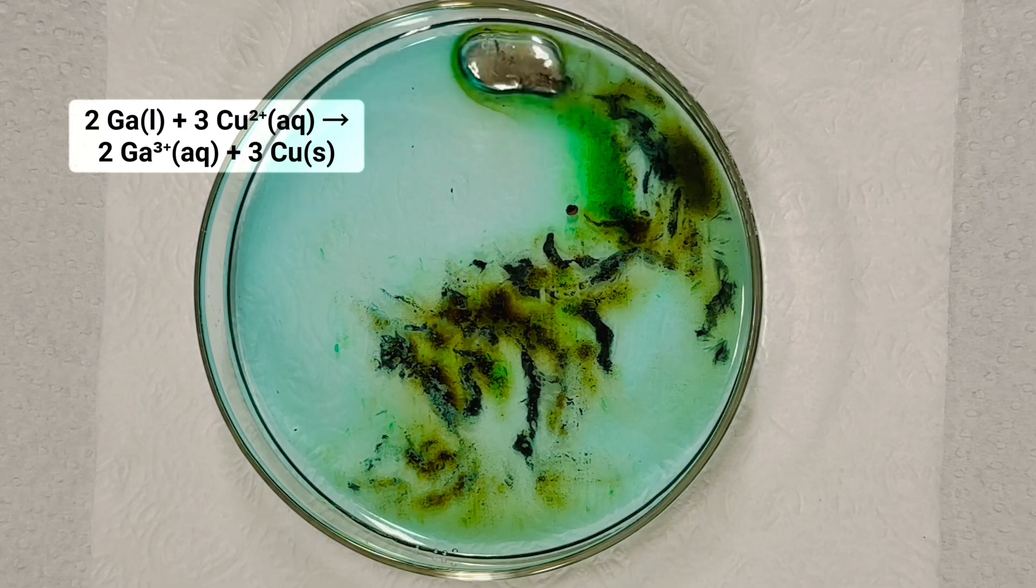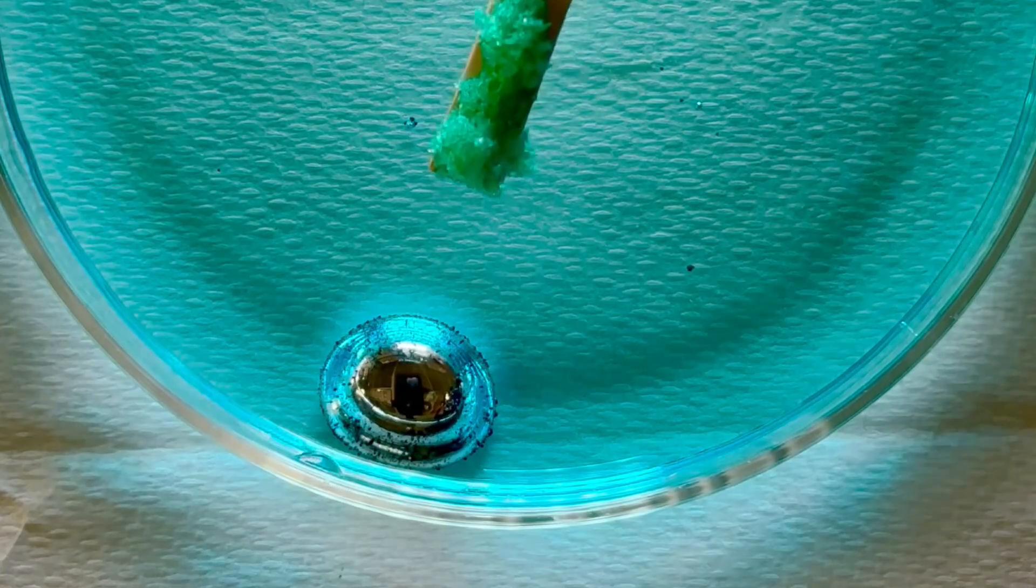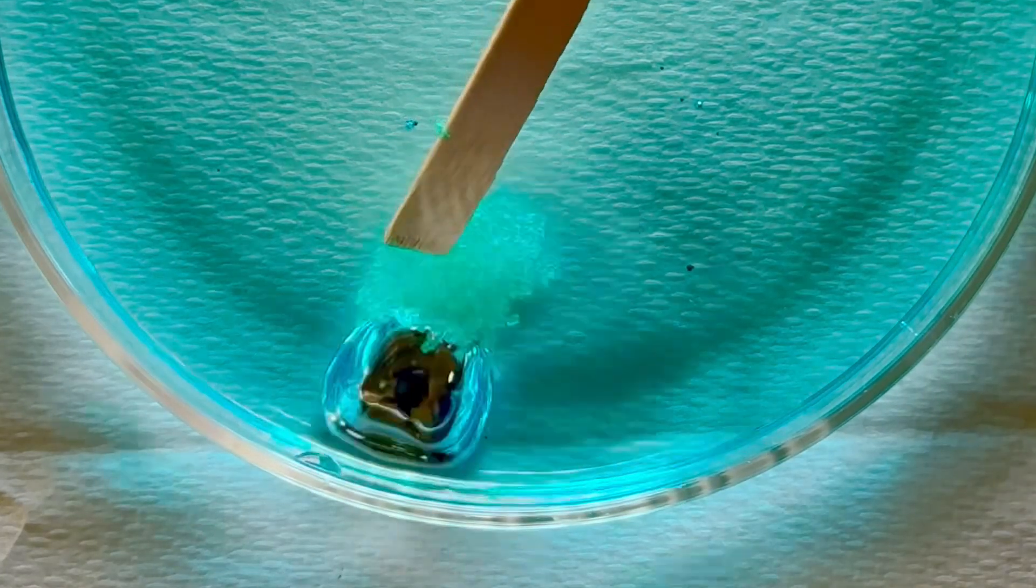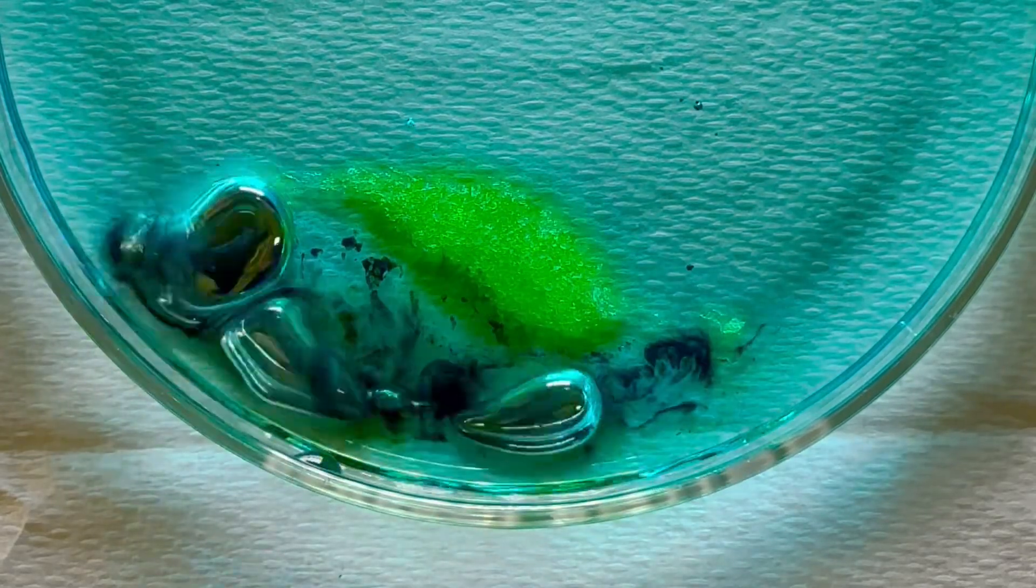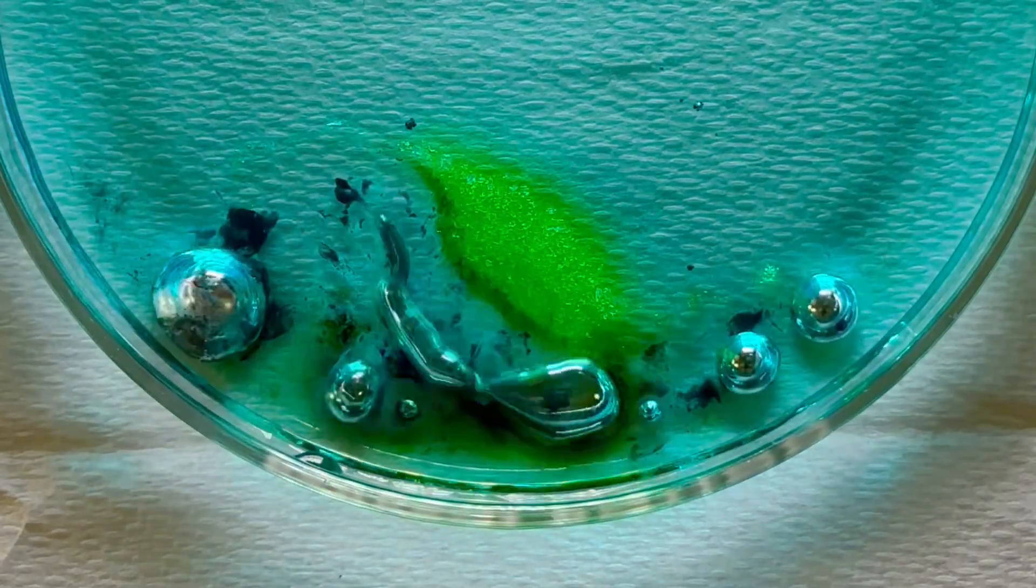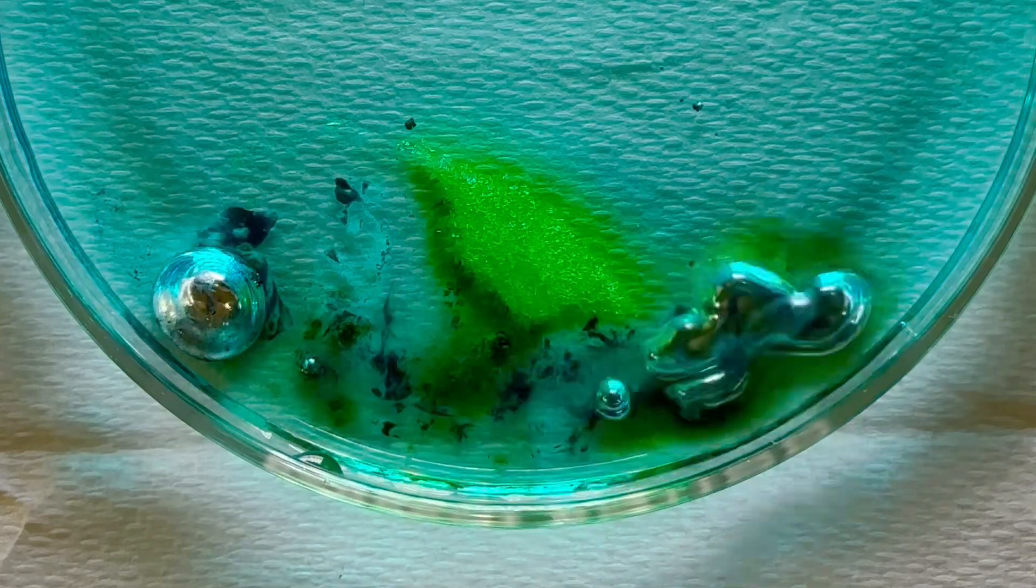And remember, these nanoparticles on the surface lower the surface tension of the liquid. This makes the region of the gallenstan that's closest to the crystals have the lowest surface tension. The side with the lower surface tension spreads out more easily, and where does it spread? Into more copper crystals.